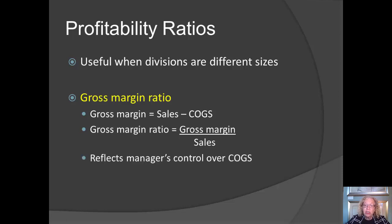That tells us how many pennies are available out of each sales dollar, and it shows the extent to which the manager has controlled cost of goods sold. All of the pennies that aren't included in gross margin must have gone for cost of goods sold.